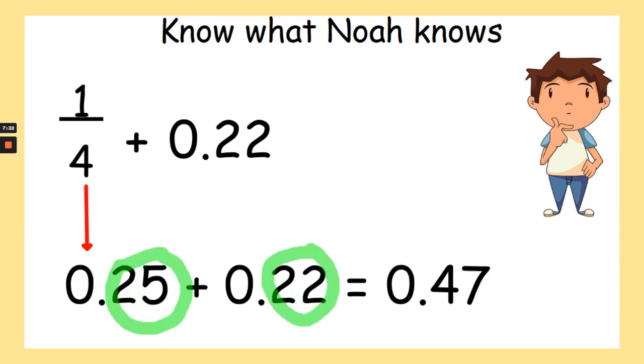It's very important that you put the 0 point and not just add 25 or 22 and get 47, because if you just put 47, your answer is incorrect. It's 0.47.